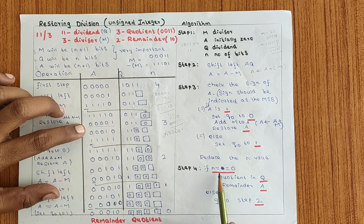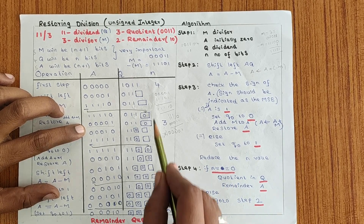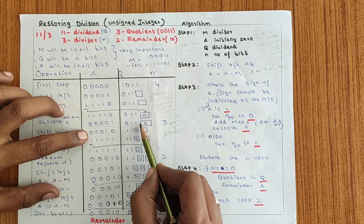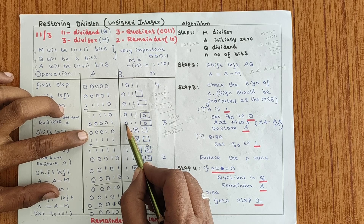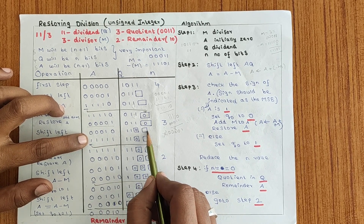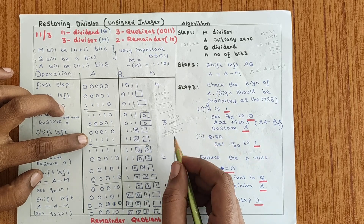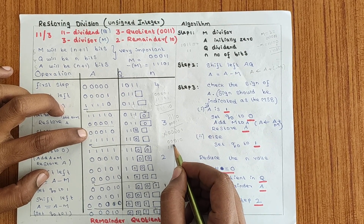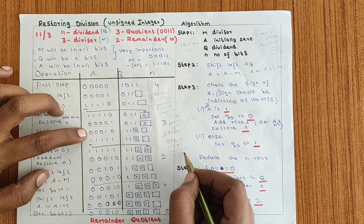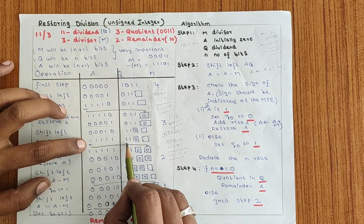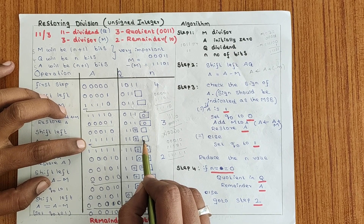Check if N == 0: condition is false, so go to step 2. Shift left AQ again: this gives A = 000010 and Q = 110 with empty space. Perform A ← A + (−M): A is 000010 and −M is 111101, giving 111111. The Q value has an empty space to be filled.